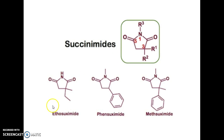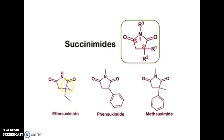Now let's talk about ethosuximide. For ethosuximide, at position 1 there is an NH group, and at position 3 there is a methyl and ethyl group.